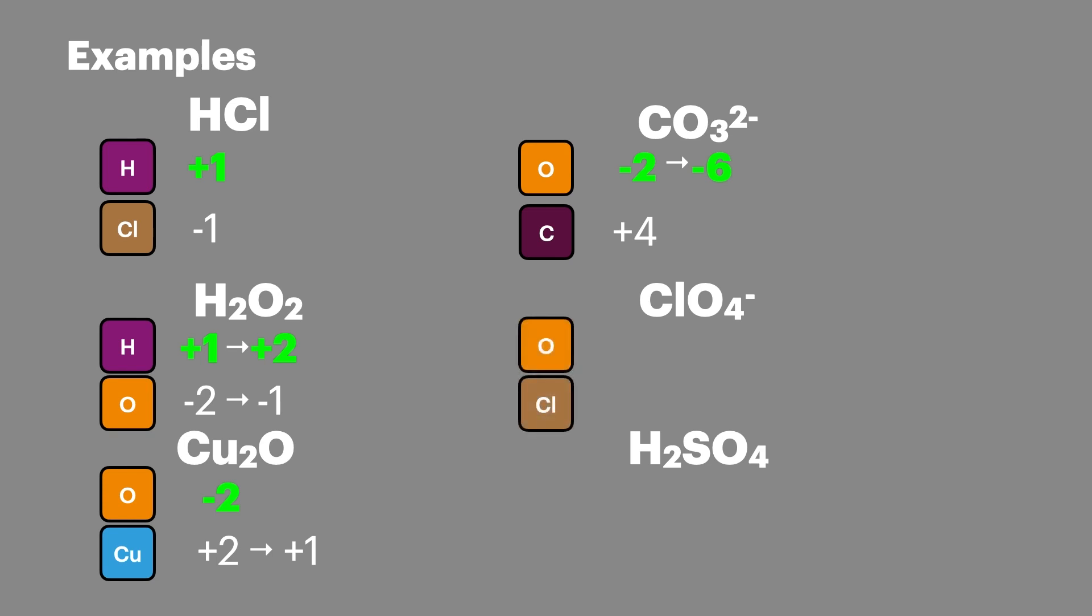Looking at the chlorate ion then, oxygen here again is minus two. There are four of them so that gets us to minus eight. But with the ion having a minus charge on it, it will mean that chlorine will be plus seven. This is one of those exceptions that we talked about as chlorine is bonded here to the oxygen and has a positive oxidation state.